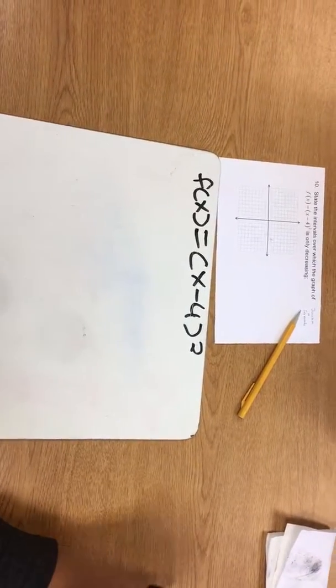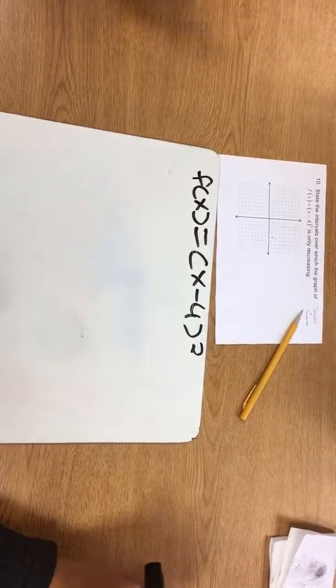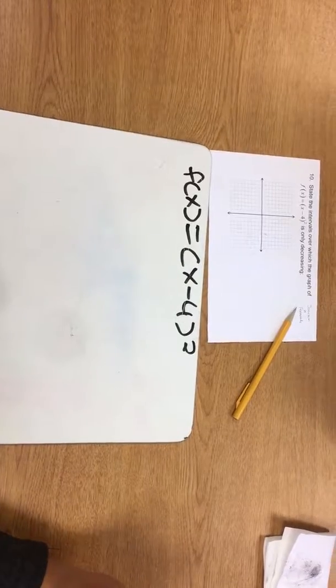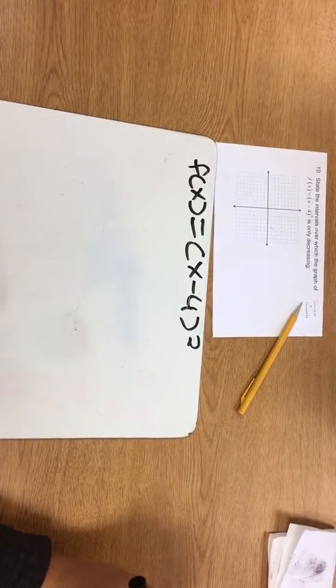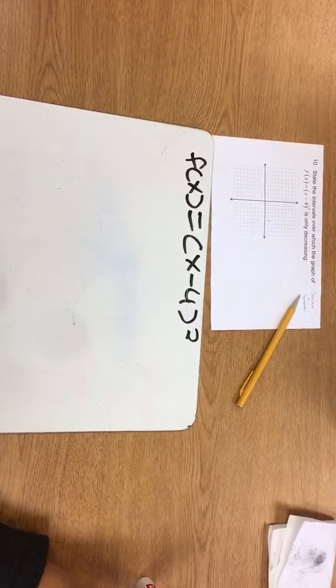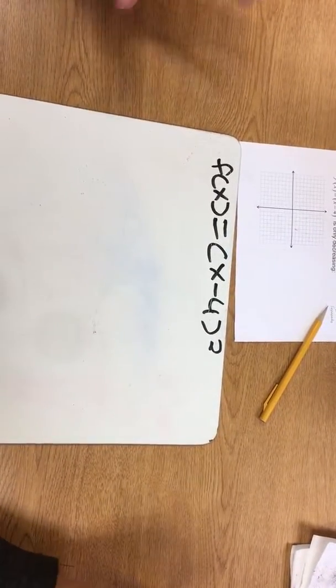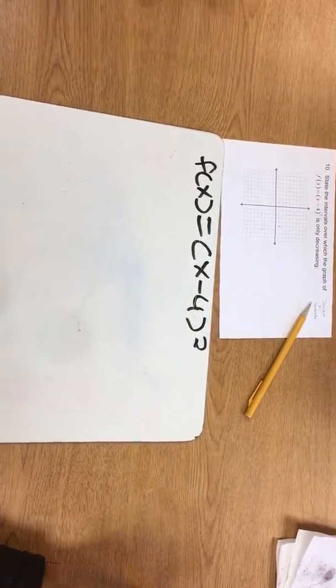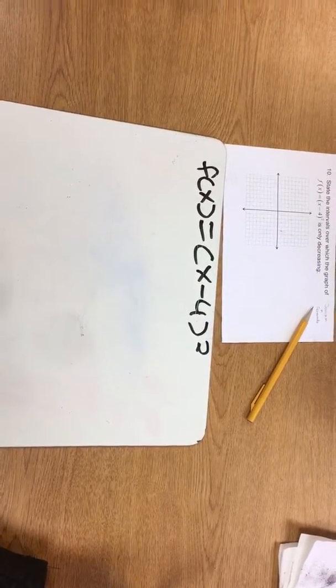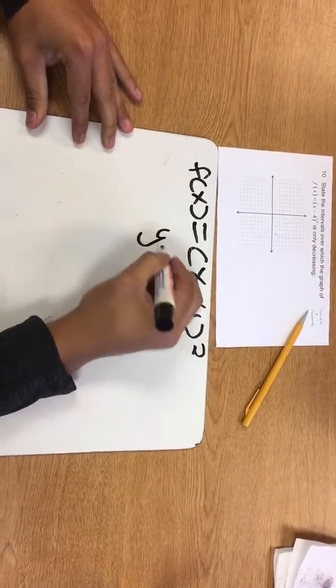Hello, in this video we are going to solve this equation which asks to state the intervals over which the graph of f(x) equals (x minus 4) squared is only decreasing. Looking at this problem, it is a quadratic equation. Remember that a quadratic equation is y equals a(x minus h) squared plus k.